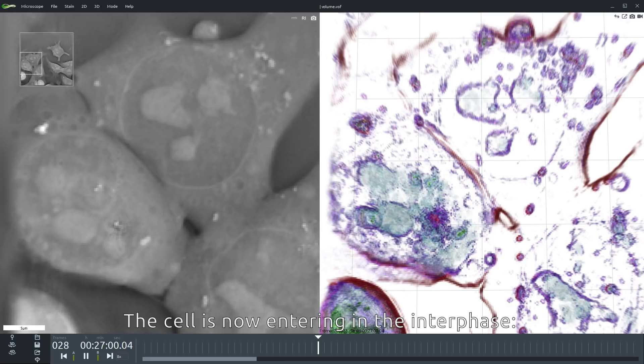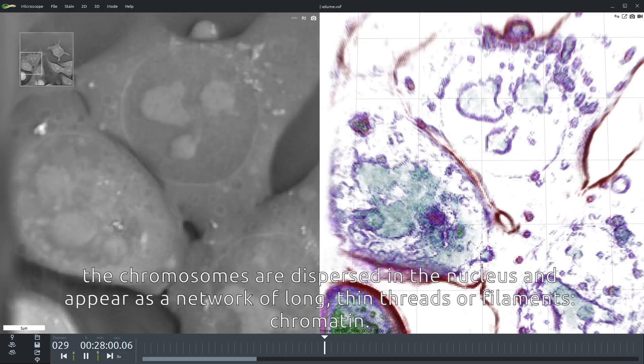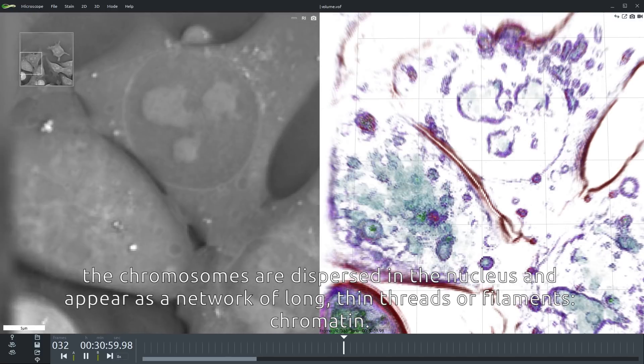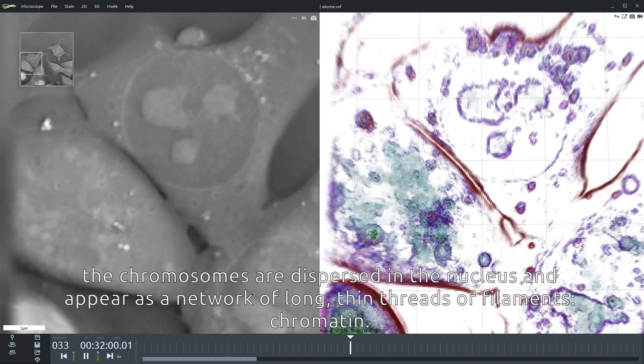The cell is now entering the interphase. The chromosomes are dispersed in the nucleus and appear as a network of long thin threads or filaments, chromatin.